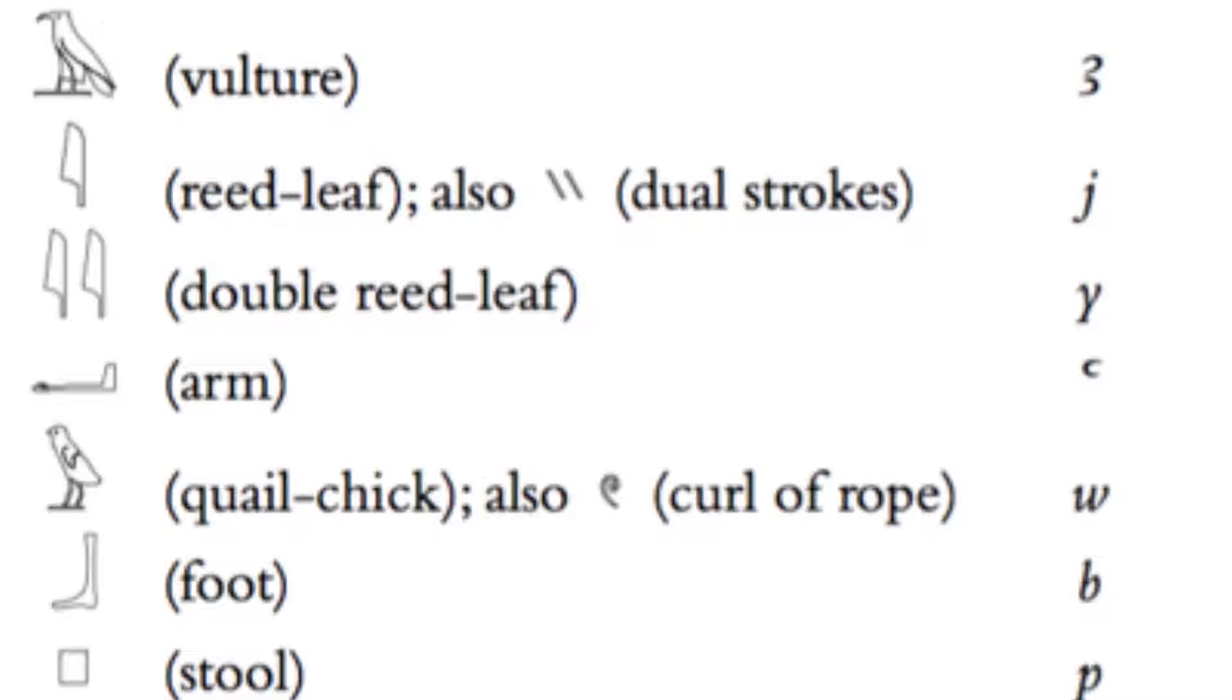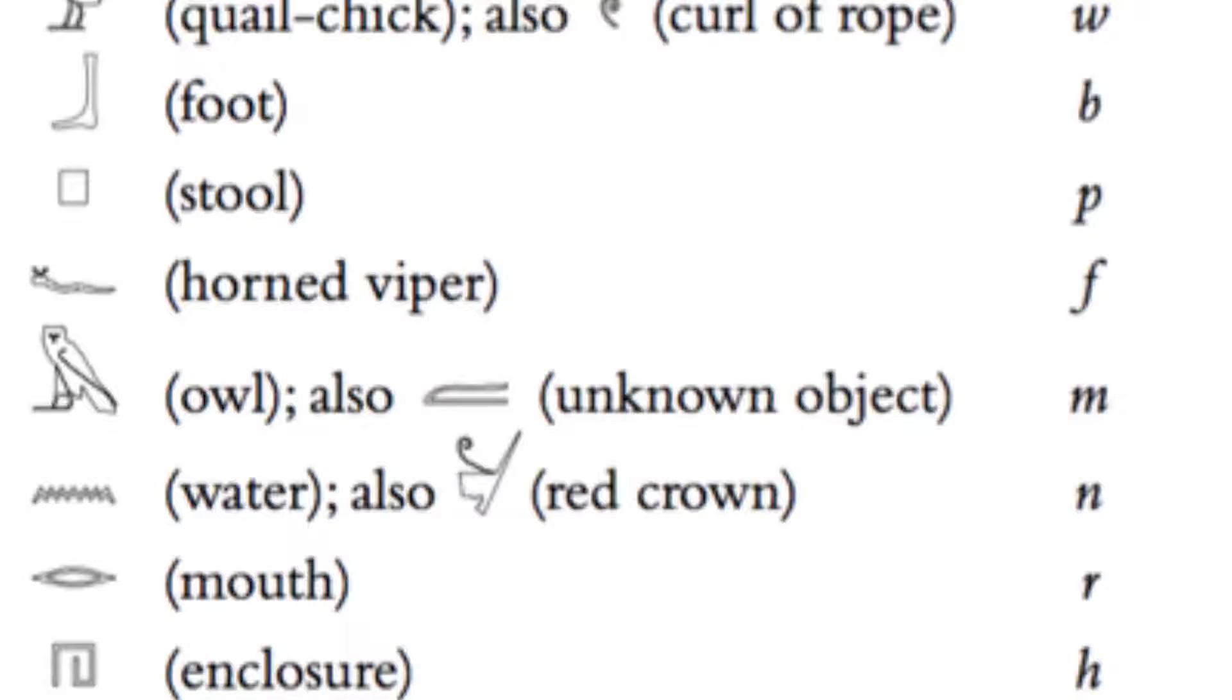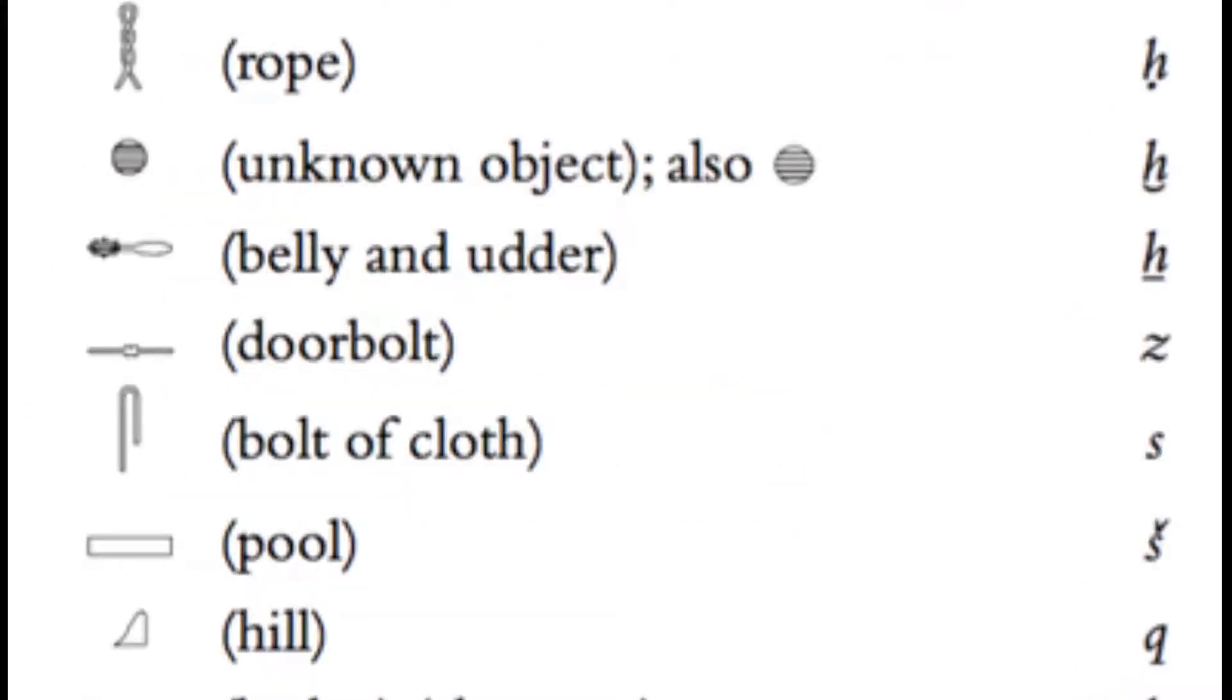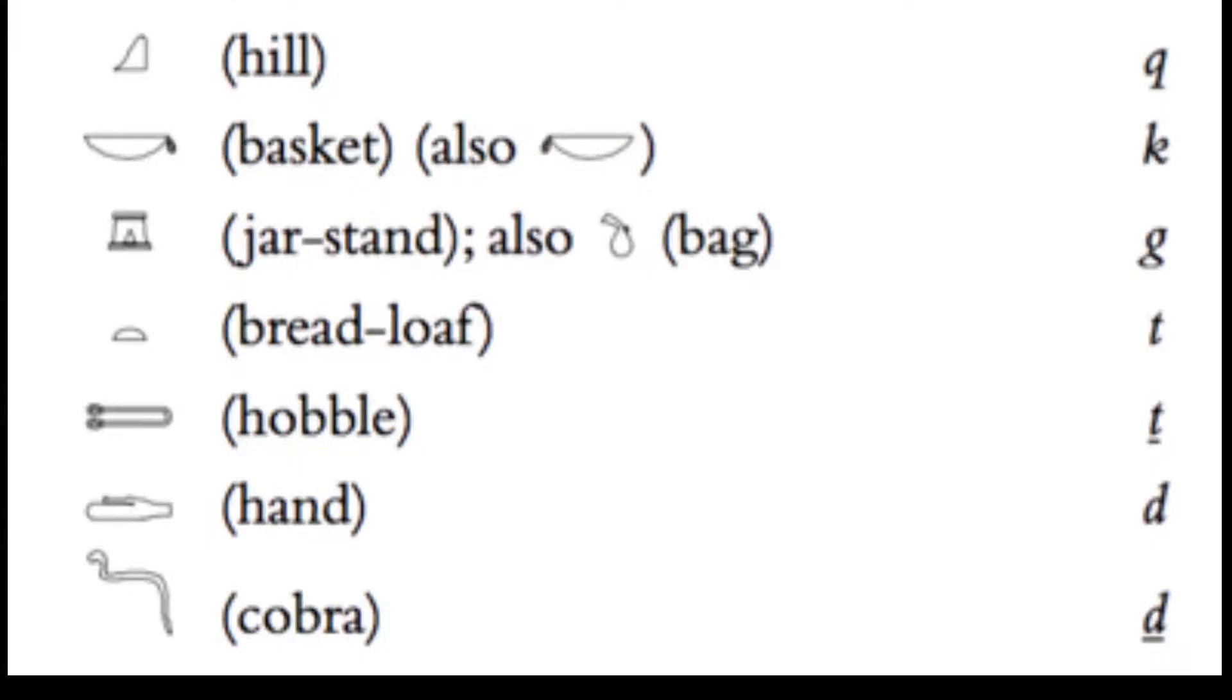The instructor reads through each letter of the Egyptian alphabet and its hieroglyphic equivalent: A, E, Y, A, W, B, B, F, M, N, R, H, H, K, G, Z, Z, S, SH, Q, K, G, T, J, D, J.